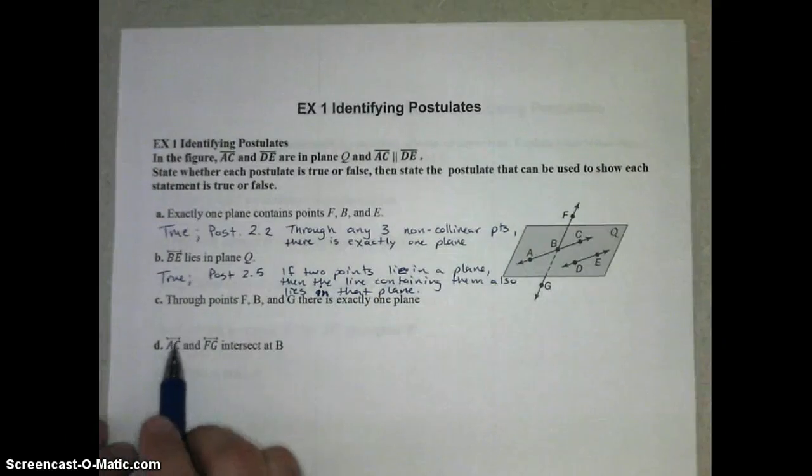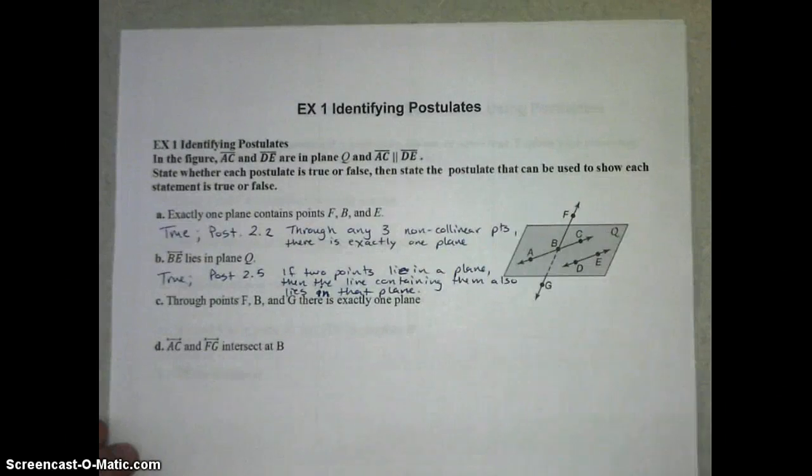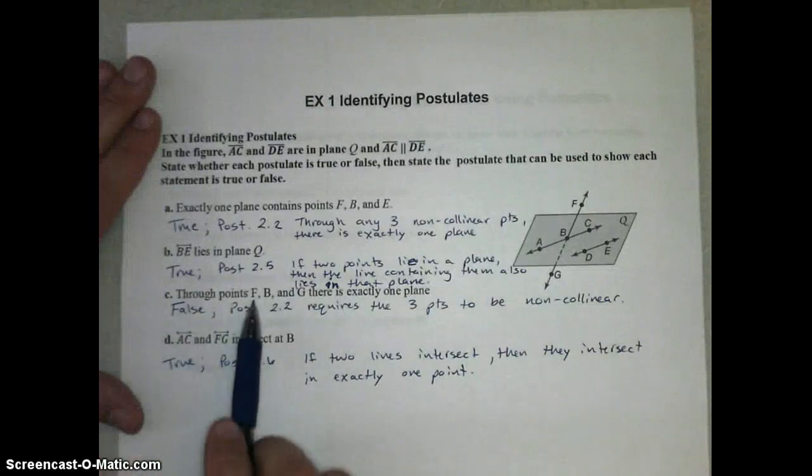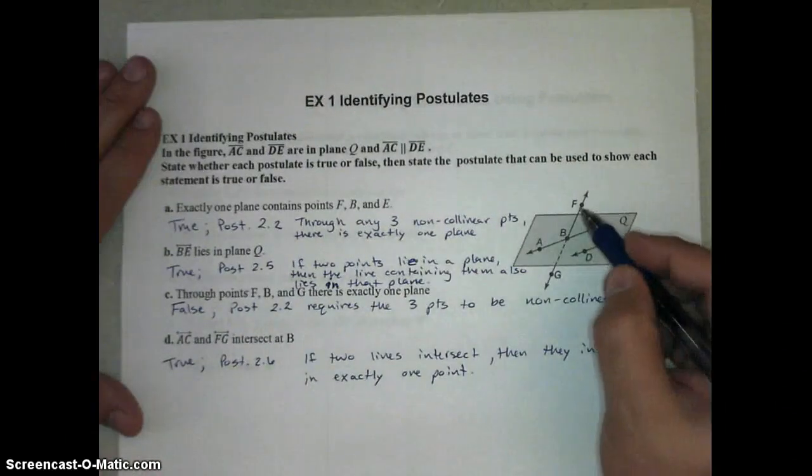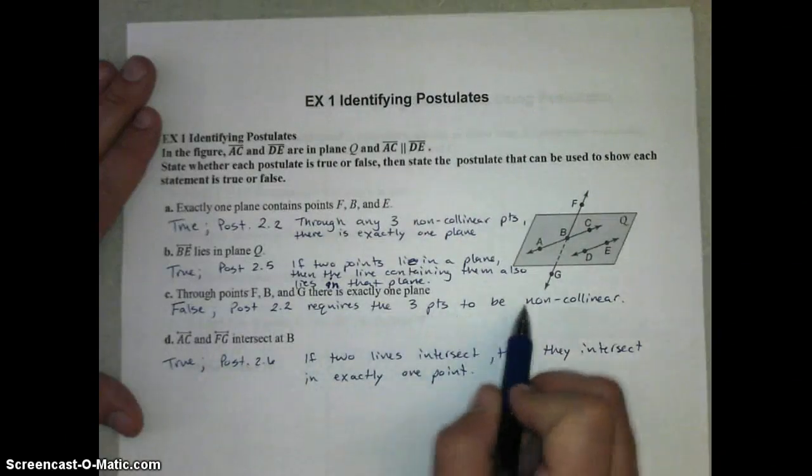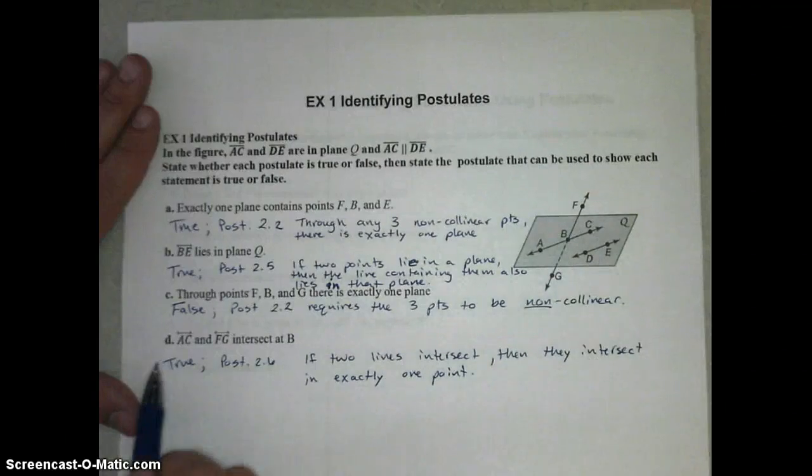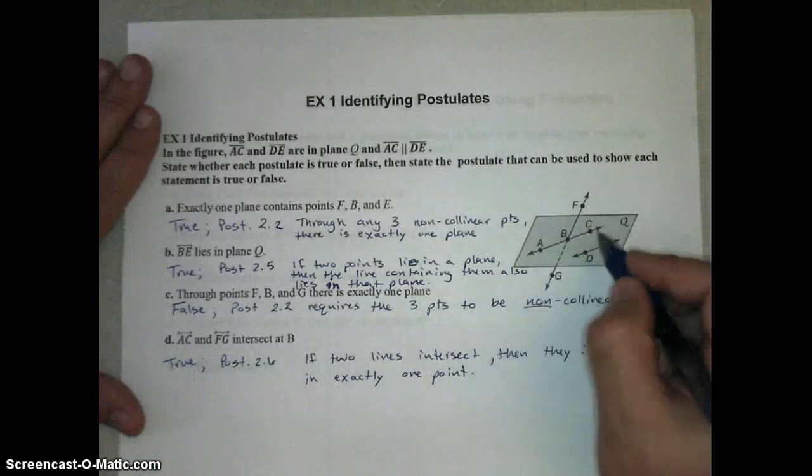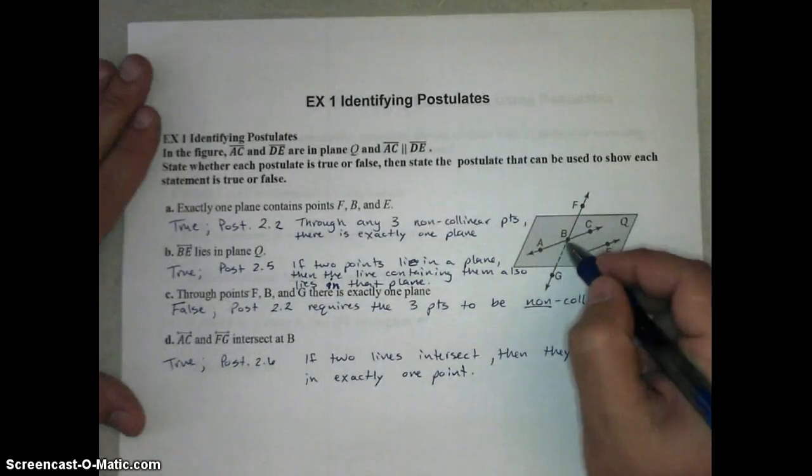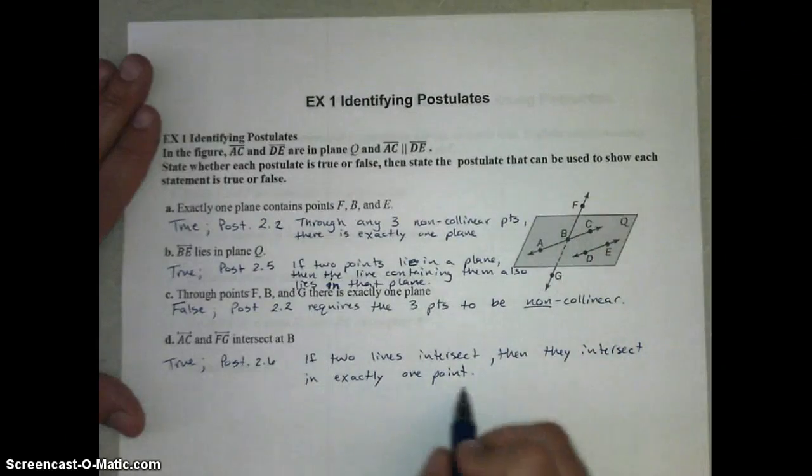Why don't you try parts C and D, see if you can identify if these are true or false statements, and write out the postulate that makes those true or false. Alright, this is what we should get. For part C, it says through points F, B, and G, there's exactly one plane. The problem is that F, B, and G are collinear, and postulate 2.2 requires the three points to be non-collinear. So this is actually false. There's more than one plane containing those three points. Part D, this is true. We're told that AC and FG intersect at B. If you look at the diagram, AC and FG do intersect, and the point of their intersection is B, and since postulate 2.6 states if two lines intersect, then they intersect in exactly one point, this is true.